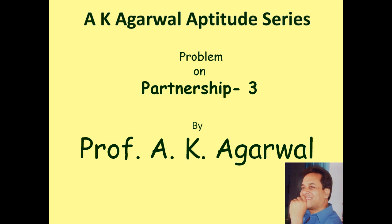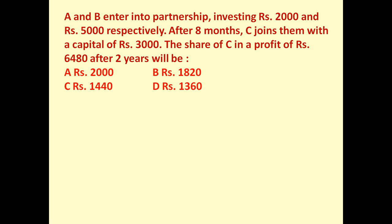Hello friends and welcome to AK Agrawal aptitude series. In this session we are going to learn a technique for solving a problem on partnership. The given problem is: A and B enter into partnership investing rupees 2000 and 5000 respectively. After 8 months, C joins them with a capital of rupees 3000. The share of C in a profit of rupees 6480 after 2 years will be?